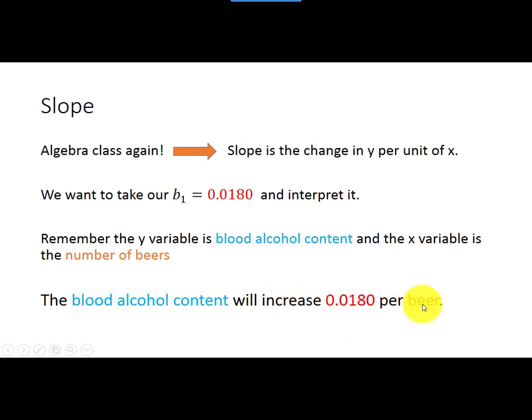Now if we were working with something different and our explanatory variable was in inches, I might say per inch. If we were talking about something and our explanatory variable was in liters, I might say per liter. But in this case, our explanatory variable was simply just counting the number of beers the students were instructed to drink. So again, this is a nice way to summarize it.